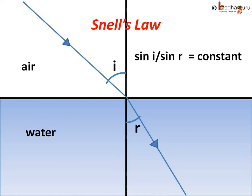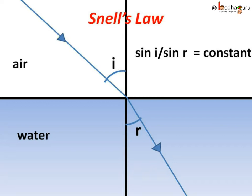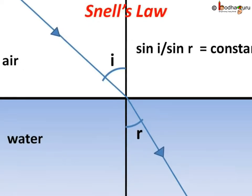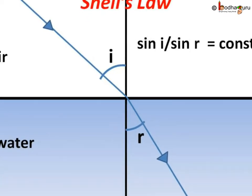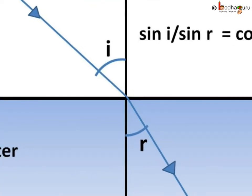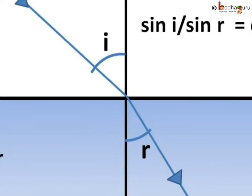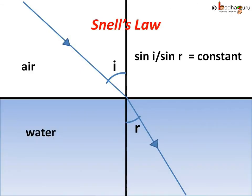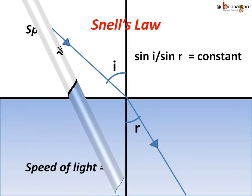We know from trigonometry if angle decreases, sin of the angle also decreases because length of perpendicular decreases. So this ratio of sin i to sin r being constant means if angle of incidence i reduces, sin i reduces, then sin r will also reduce because ratio is constant, and that also means angle of refraction will also reduce, and vice versa. If sin i increases, sin r also increases.